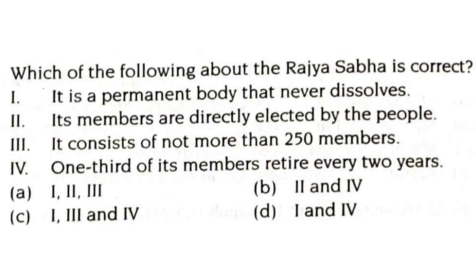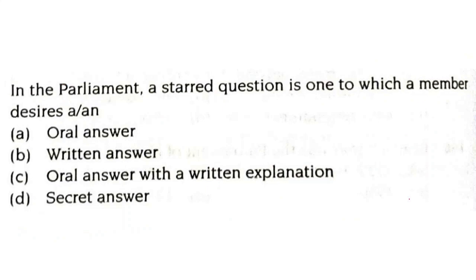Which of the following about the Rajya Sabha is correct? It is a permanent body that never dissolves — correct. Its members are directly elected by the people — wrong. It consists of not more than 250 members — correct. One third of its members retire every two years — correct. So the correct answer is statements one, three, and four. A starred question in parliament is one to which a member desires an oral answer.